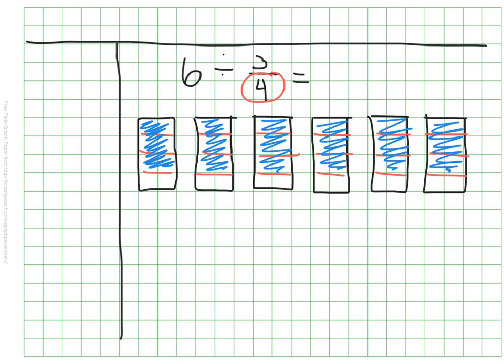However, I'm not quite done. I know that so far I have 1, 2, 3, 4, 5, 6 groups of 3 fourths. But I have some 4ths left over. I have 1, 2, 3 more. This is another group. And I have 1, 2, 3 more. That's another group.